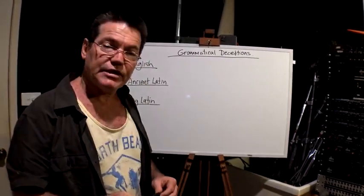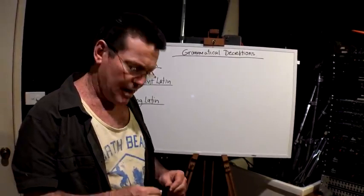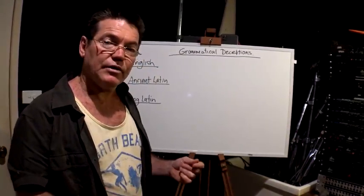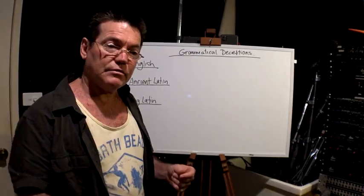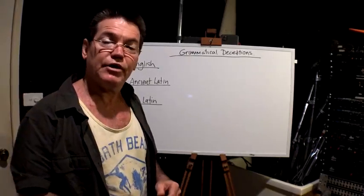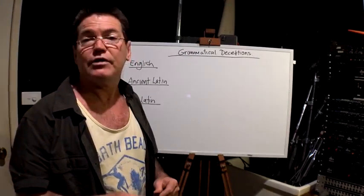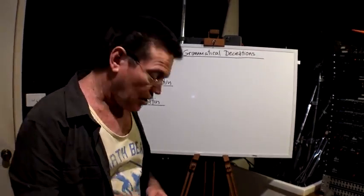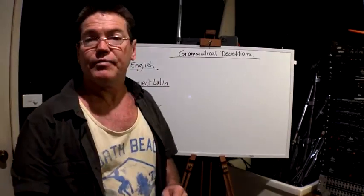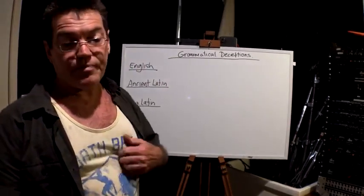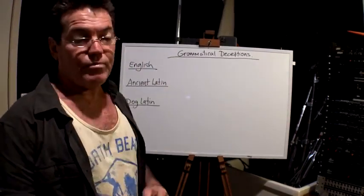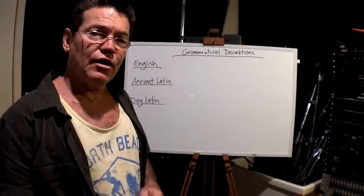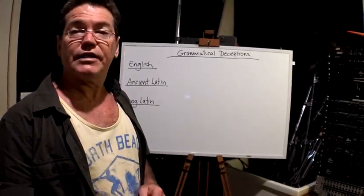In 1966 that changed from a pound to a promissory note system, like the US Federal Reserve Promissory Note system. But something else changed in 1966 as well — our schools removed grammar and Latin from the curriculum in 1966.